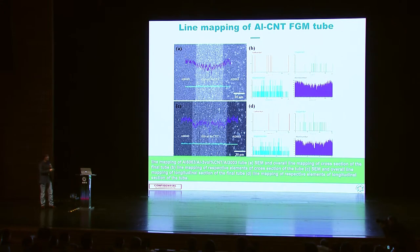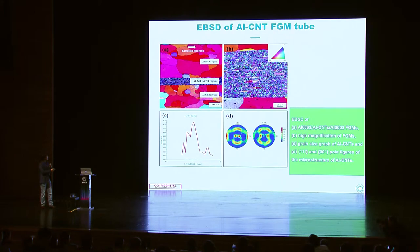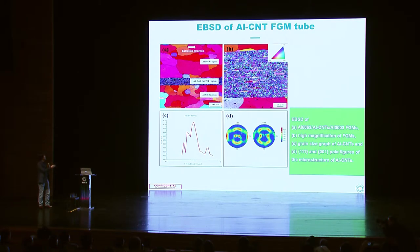Of course, we performed line profiling and confirmed the carbon nanotubes are still intact inside — not broken. This is a very interesting EBSD result: conventional aluminum 6000 and 3000 series shows quite a large grain size, but the aluminum with CNT shows very fine particles, in some cases at the nano scale. This fine grain structure also enhances the mechanical properties.